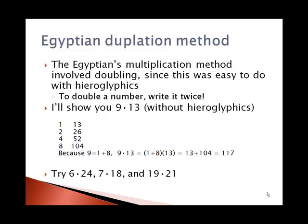Since 9 is 1 plus 8, I can take the number on the row with 1 and the number on the row with 8 — that is 13 and 104 — and add those together to get 117, which is the product of 9 and 13.